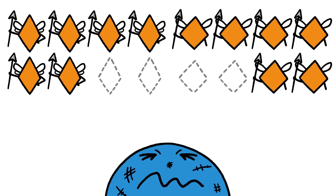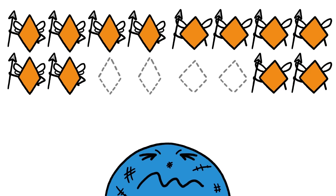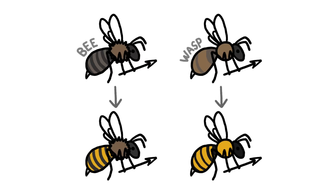So stinging species, like bees and wasps, often end up converging on a single appearance. Once predators learn that yellow and black striped prey isn't worth the risk, cheaters creep into the system.